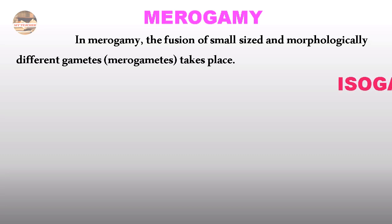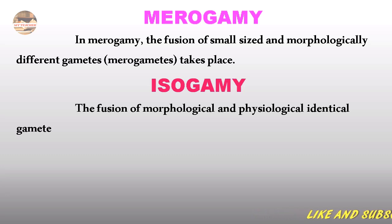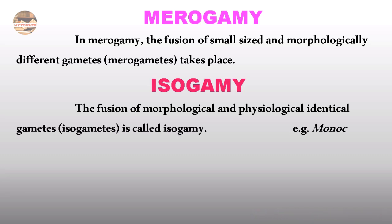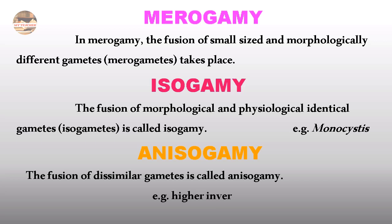The fusion of morphologically and physiologically identical gametes is called Isogamy. Example is Monocystis. The fusion of dissimilar gametes is called Anisogamy. Examples are higher invertebrates and all vertebrates.